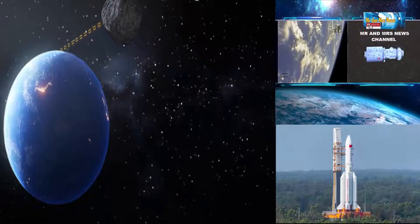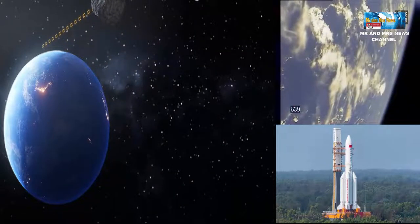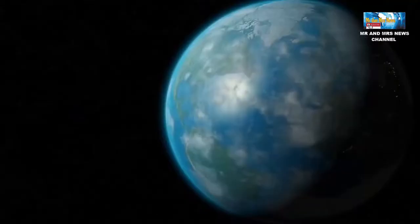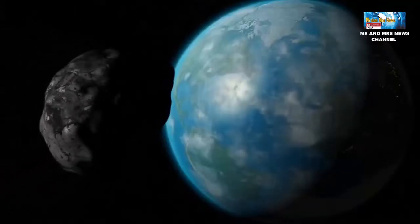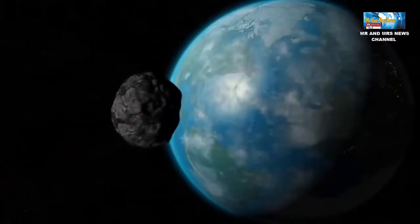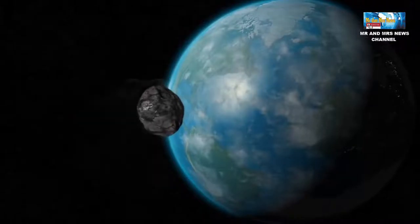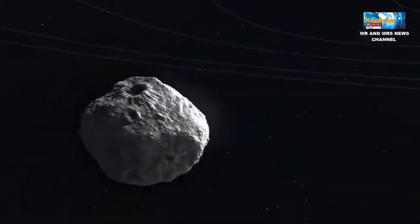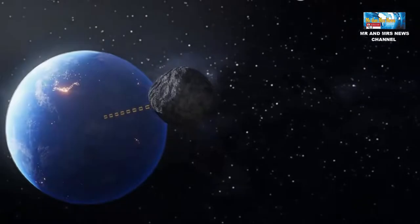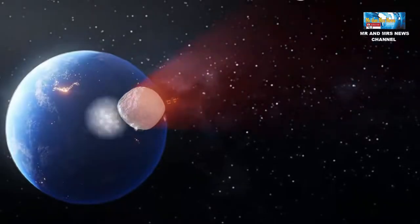Penelitian ini didasarkan adanya asteroid bernama Bennu yang mengorbit matahari yang tingginya sama dengan Empire State Building. Ini termasuk kelas petuan yang berpotensi menyebabkan kerusakan regional atau kontinental jika menghantar bumi.